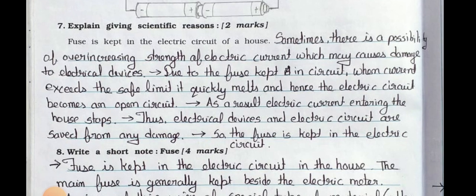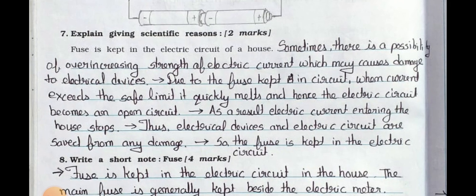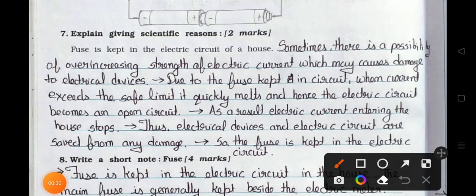In that, Main 7: Explain giving scientific reasons, two marks each question. Fuse is kept in the electric circuit of a house. Answer is: Sometimes there is a possibility of over-increasing strength of electric current which may cause damage to electric devices.